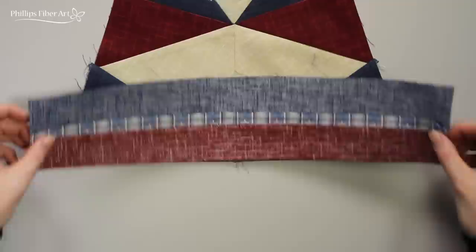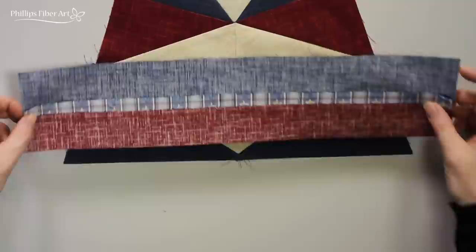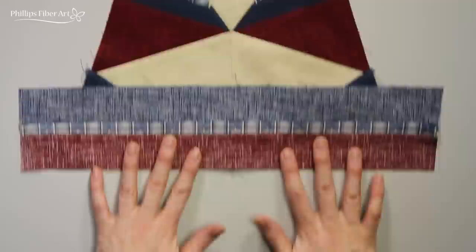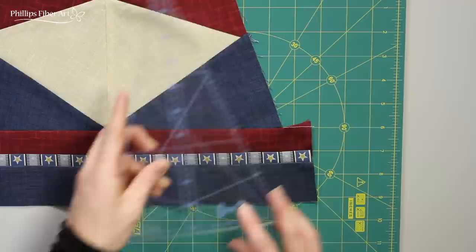Sew those on. Now we're gonna add our border. Yep, that's a built-in border right there. I like to find the center, fold it in half. You can make sure it aligns to the center of your pentagon. Sew that on there, open it up, and there we go.